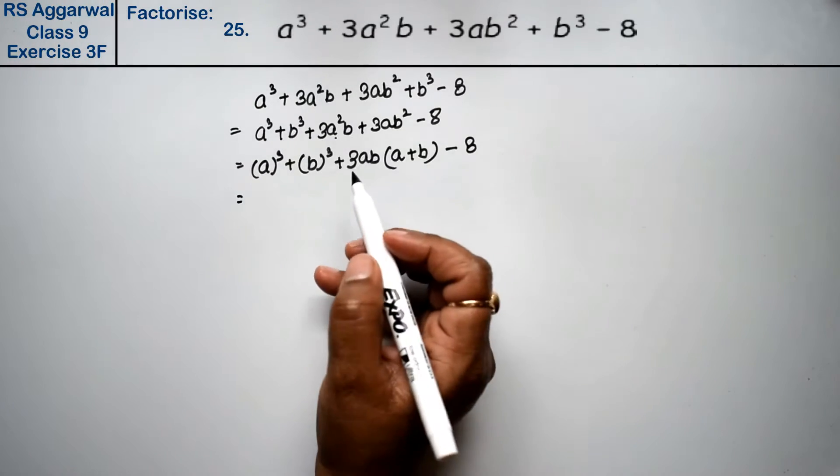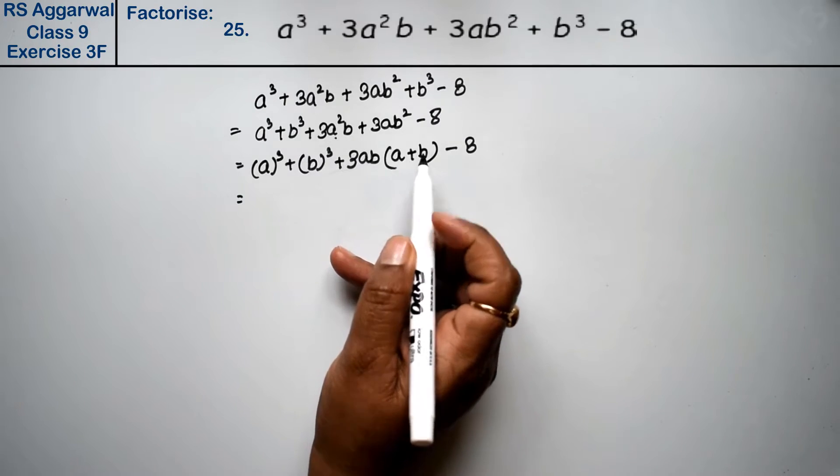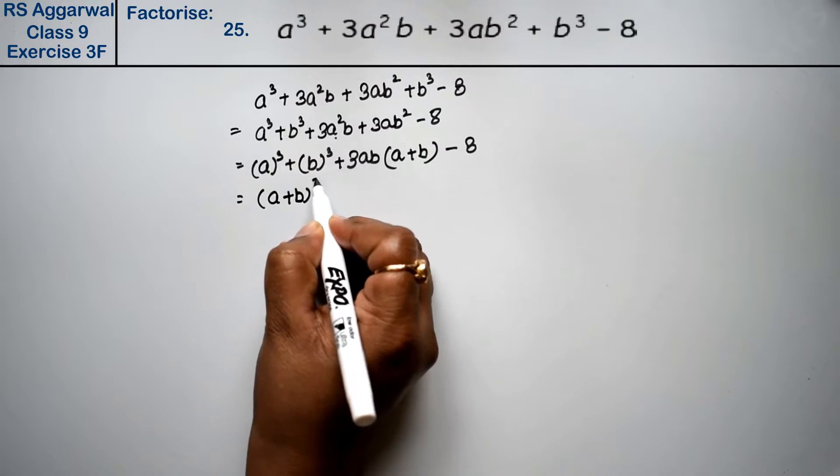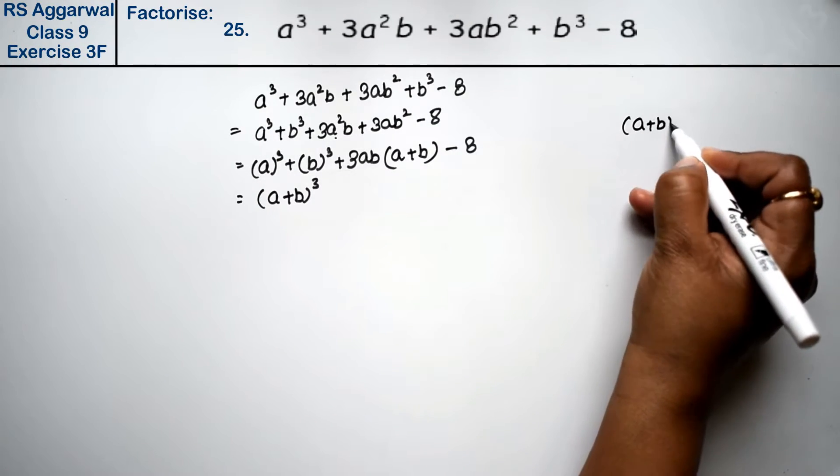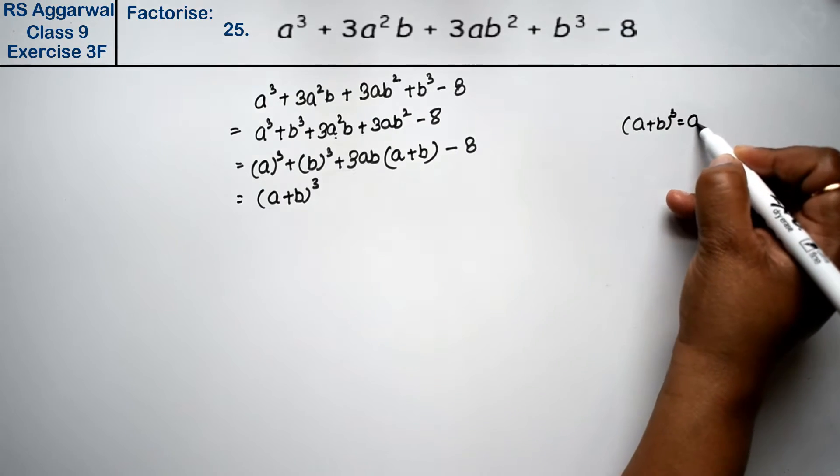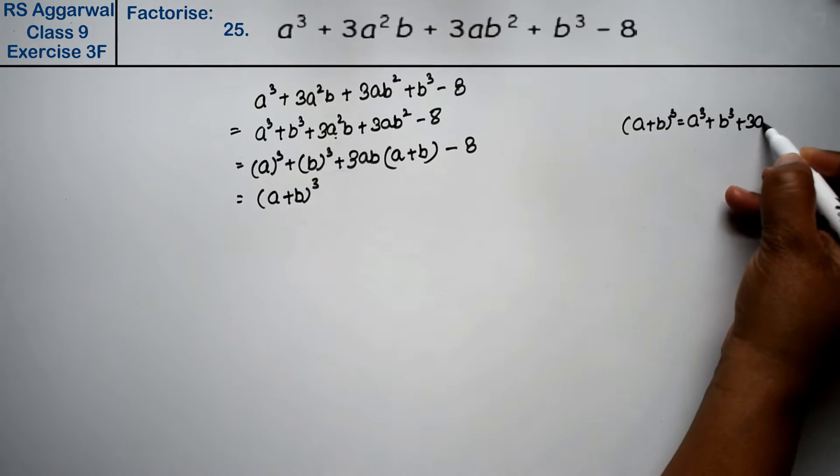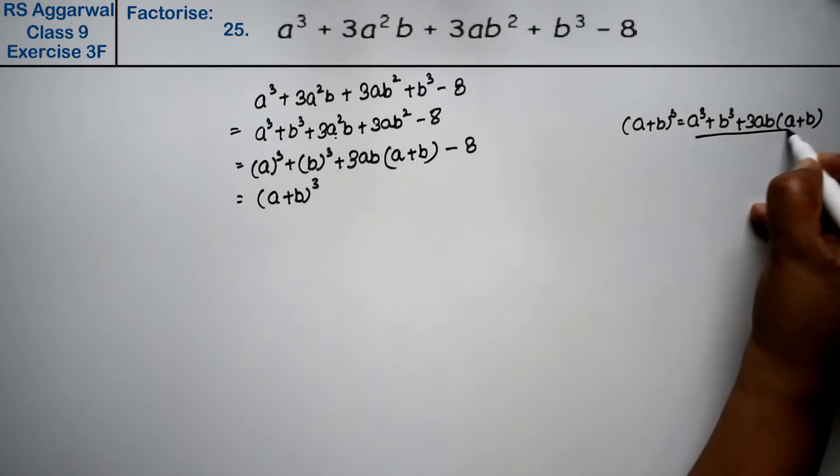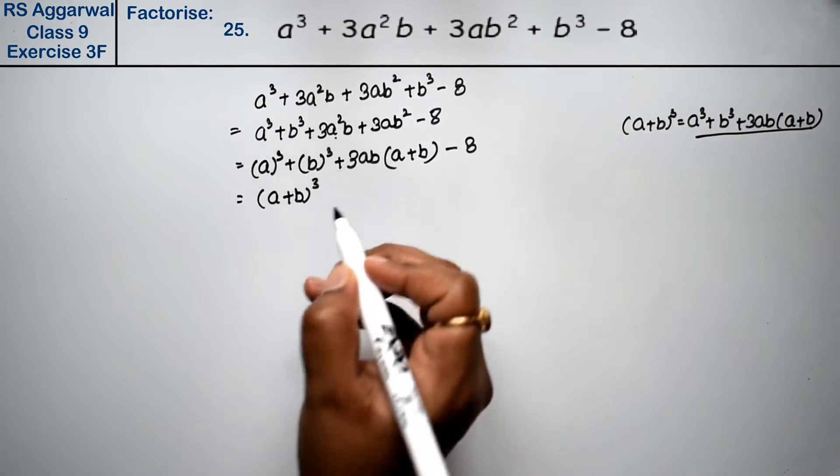Now look, what is the formula: a cube plus b cube plus 3ab times a plus b is the formula for a plus b whole cube. This term is written here, so in its place I've written a plus b whole cube minus 8.